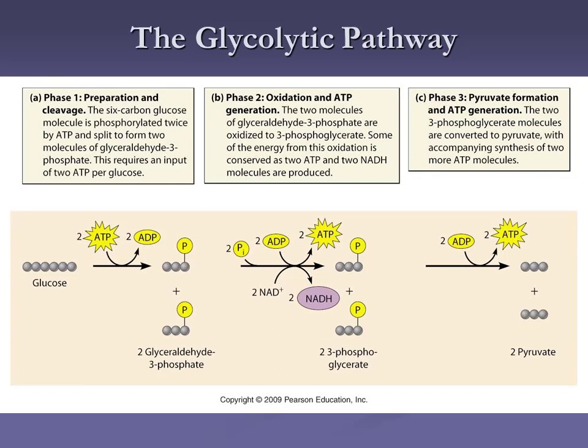We broke the molecules apart in phase one, changed them in phase two, and now our final formation of pyruvate: we take the 3-phosphoglycerates, change them into pyruvate, liberating two more ATP. So we've gone from one big single box to three smaller boxes with detail, and now let's look at each individual step.